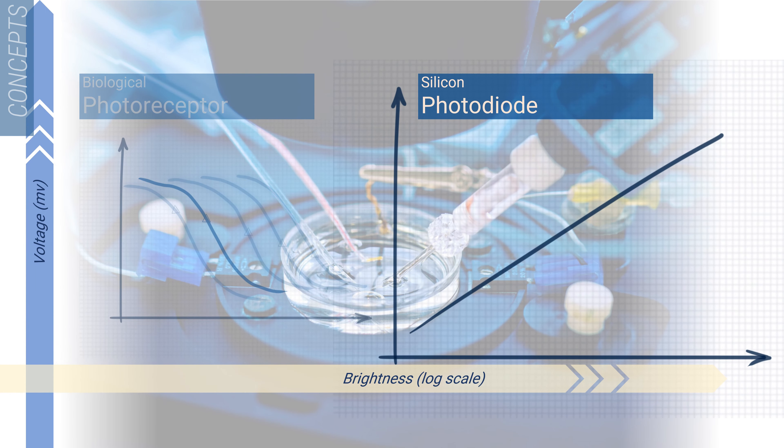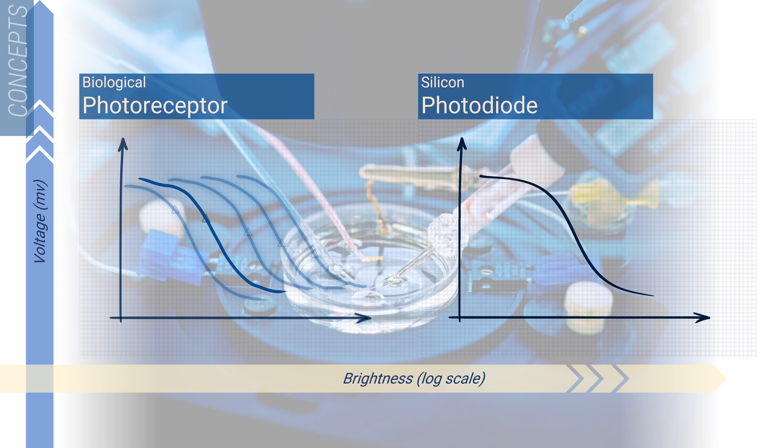The engineering behind neuromorphics is understanding how to combine other device elements to achieve the desired output. Not only can we match this one curve, but we can also match the various brightness adaptation curves as well. This is just an illustration of how one might go from the biological understanding of a photoreceptor cell to device implementation. However, modeling one type of neuron in the retina will not give you a useful model or device for mimicking its full behavior.